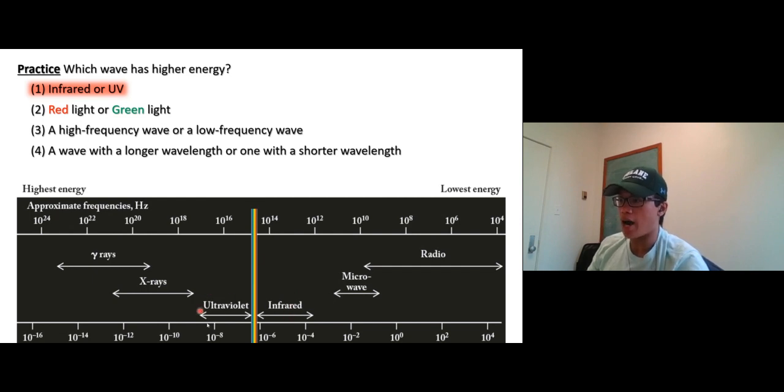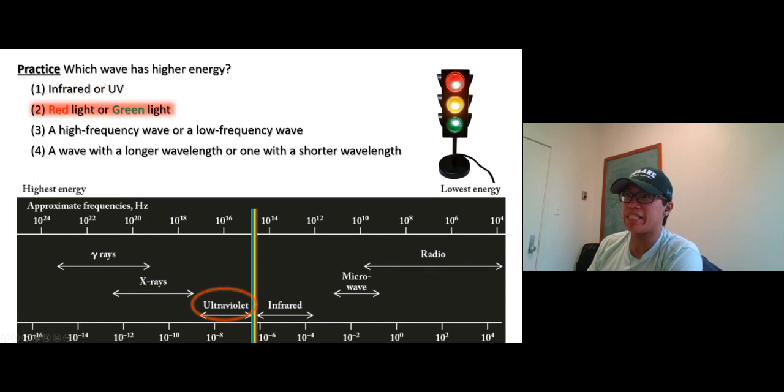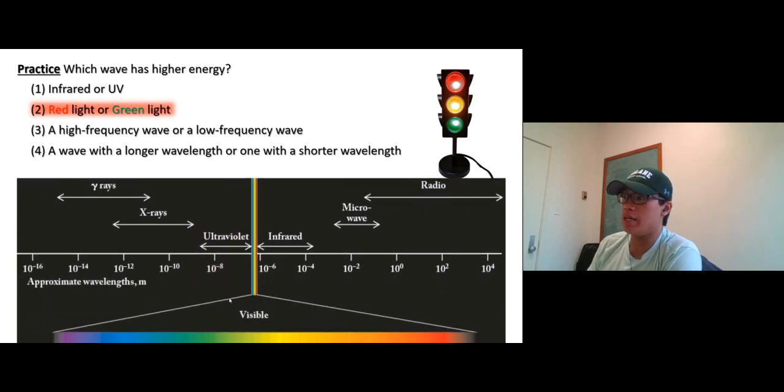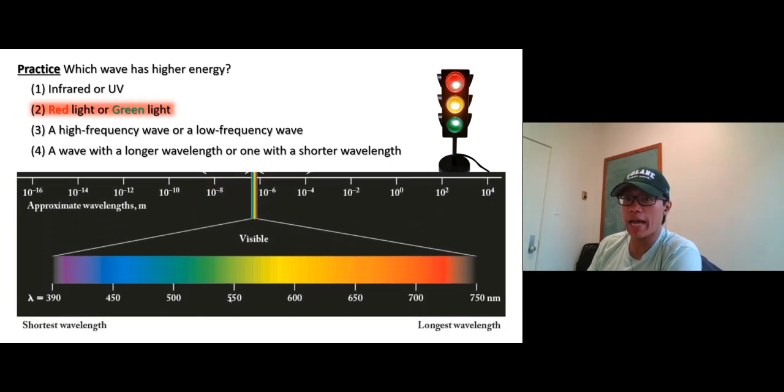Next one: which one has higher energy, red light or green light? We have to look at the visible light. Green light is right here, red is right here. So higher energy and lower energy—green light has higher energy.